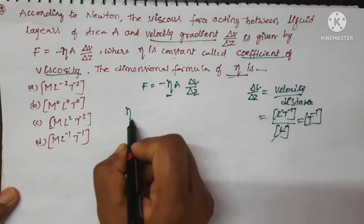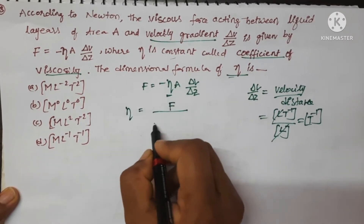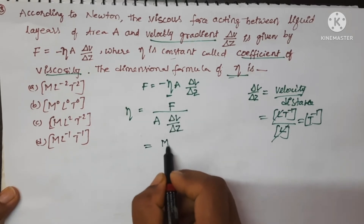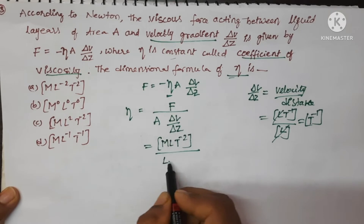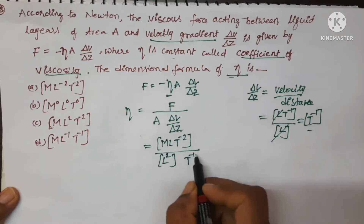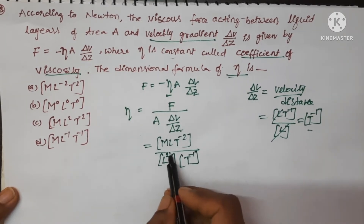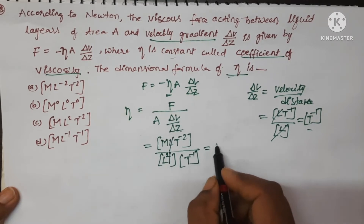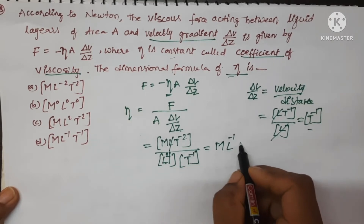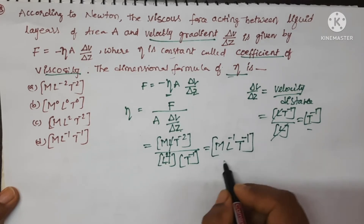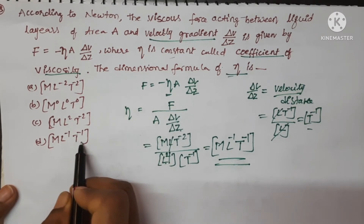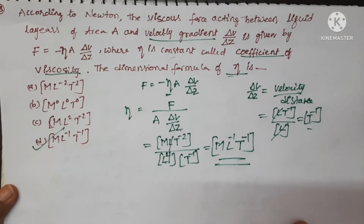Now write the formula for η: η = F / (A × dv/dz). Write the dimensional formula of force: MLT⁻², upon area L², and dv/dz is T⁻¹. Here 1 L and 1 L will get cancelled. The remaining terms are M, L⁻¹, T⁻¹. So the dimensional formula of η is ML⁻¹T⁻¹. D is the correct option.